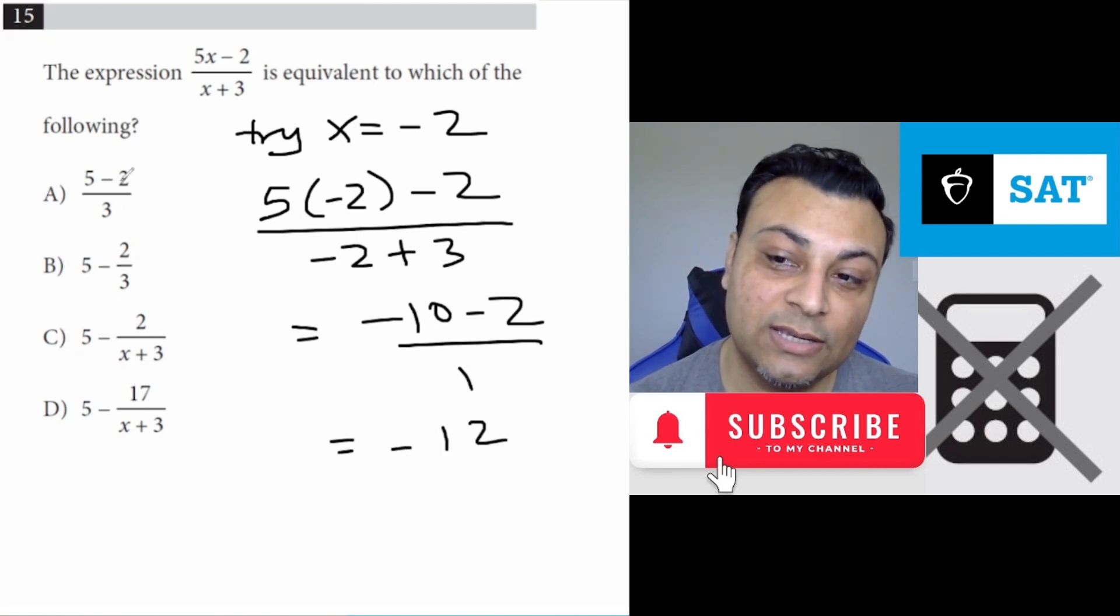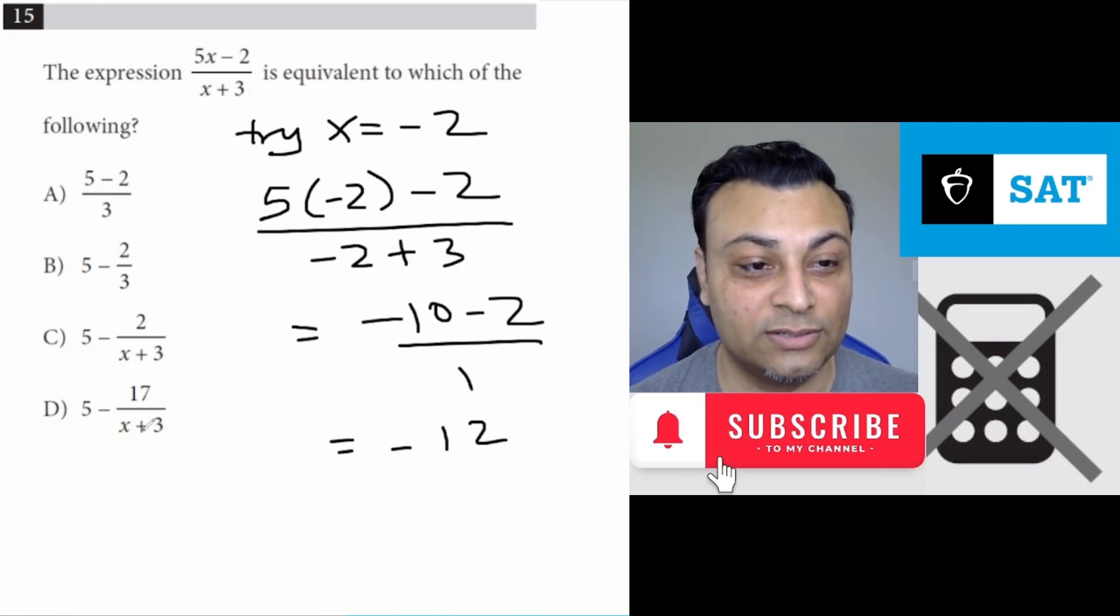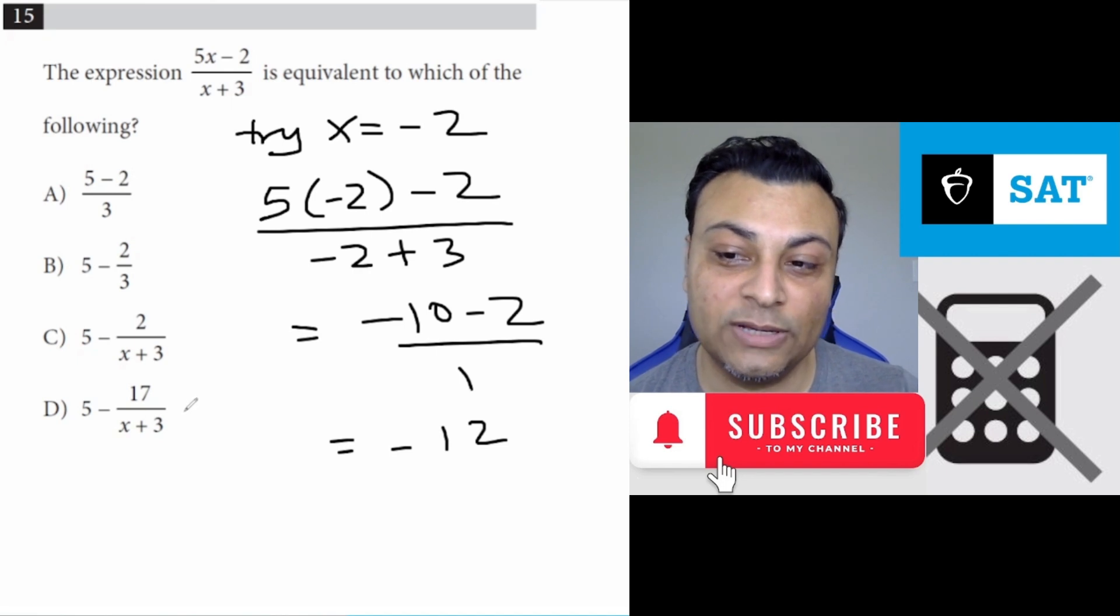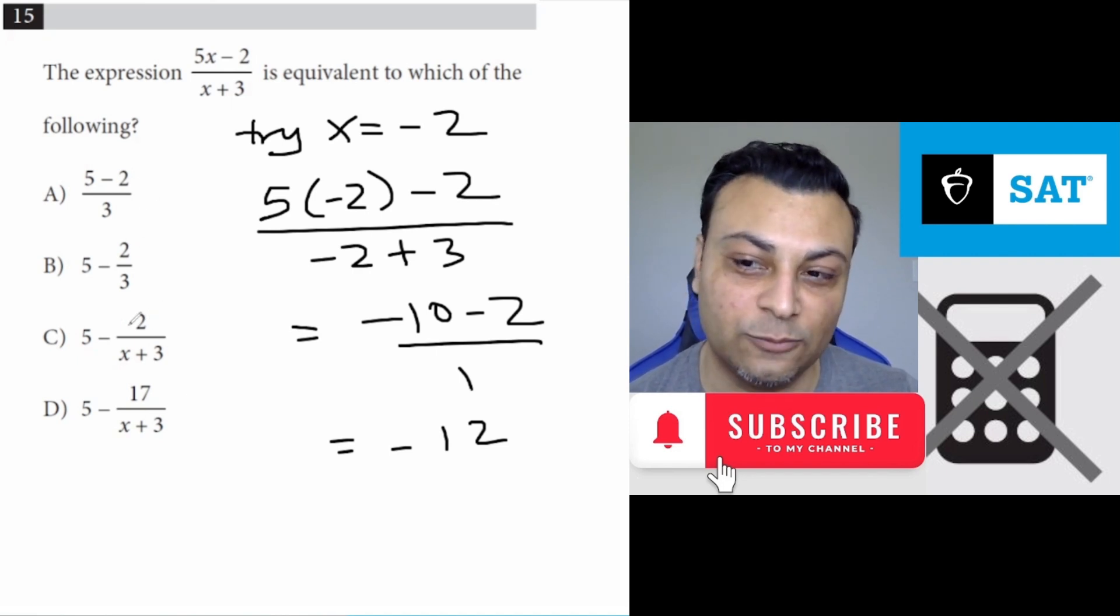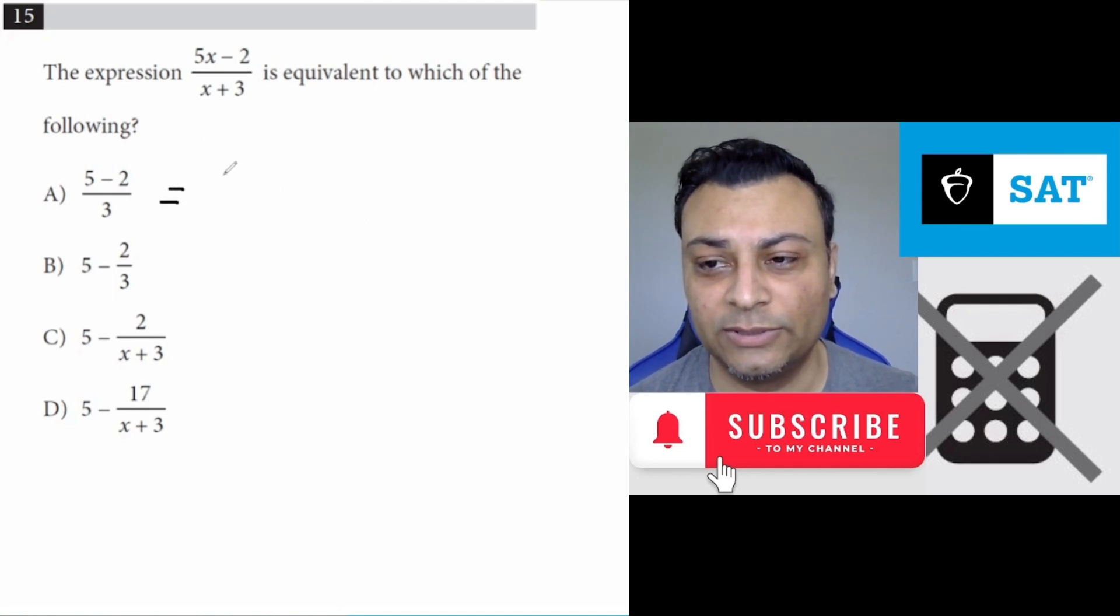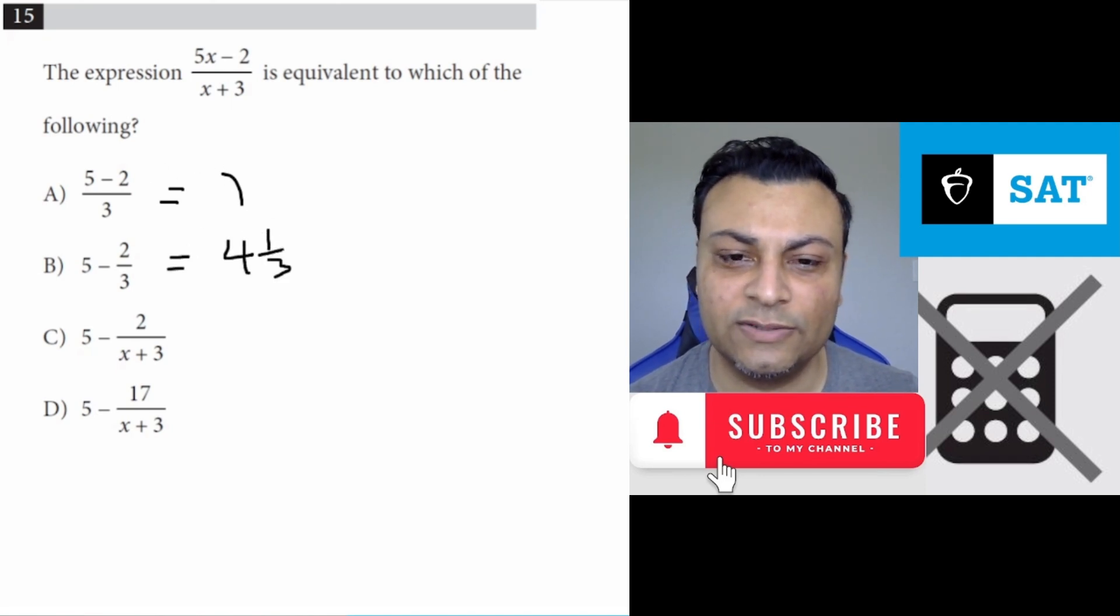That means if I plug negative 2 into one of these, I should get negative 12. It would be unfortunate if more than one option gave me negative 12, because then that wouldn't narrow it down enough. But if you plug in, this one has no x involved, and this is not even remotely close. This would be 5 minus 2 over 3, and this is 5 minus 2 thirds, so it's 4 and a third. So neither of these is negative 12.